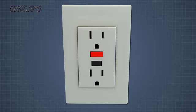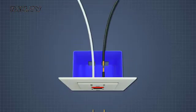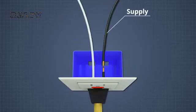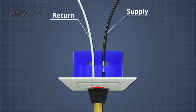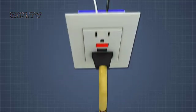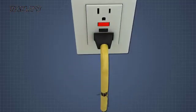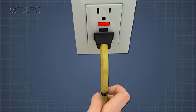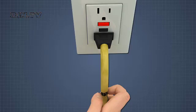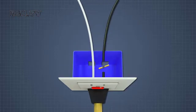A ground fault circuit interrupter, or GFCI, is a device designed to prevent electrical shocks. A GFCI operates by sensing the difference between the current in the supply and return conductors. Under normal conditions, these currents are equal. However, if a problem develops with the device you are using, electrical current can flow from your hand through your feet to the ground. The GFCI senses that the current in the supply conductor does not equal the current in the return conductor because some of the current is flowing through your body. The GFCI will then trip and cut off electrical supply to prevent electrocution.